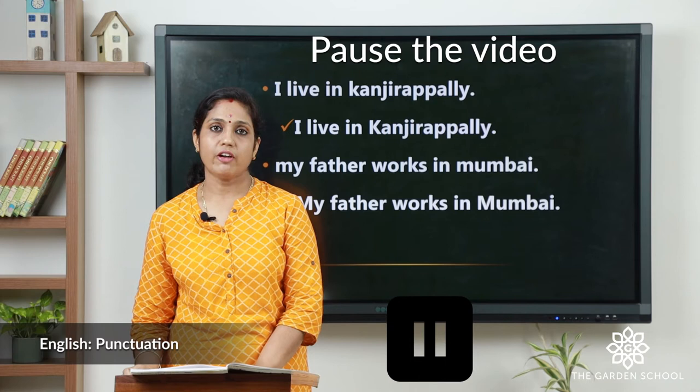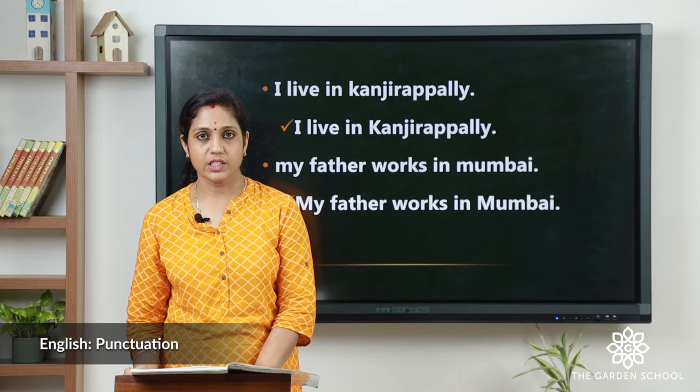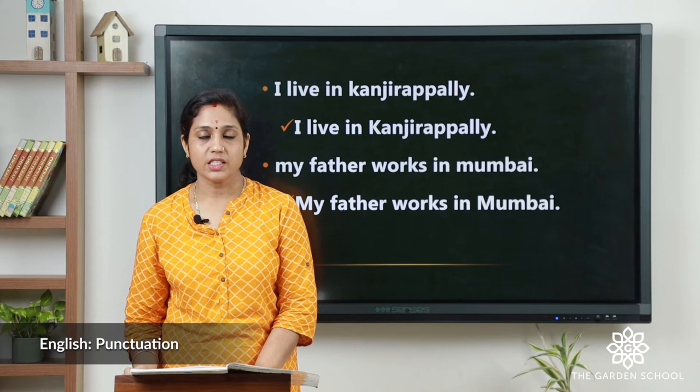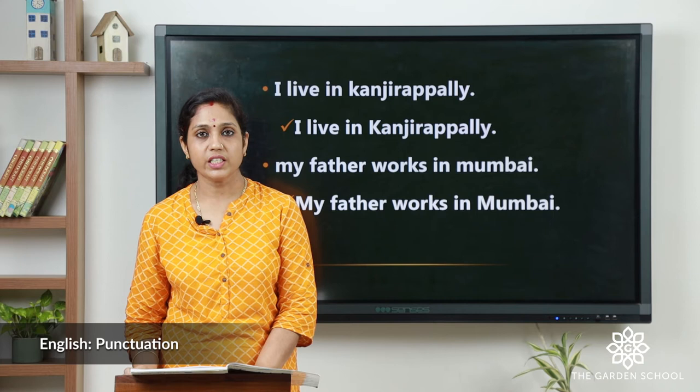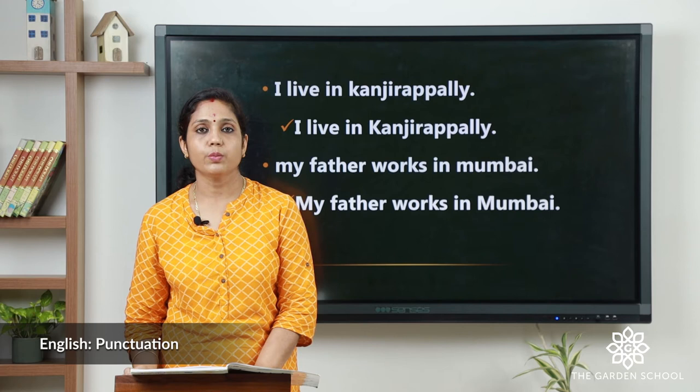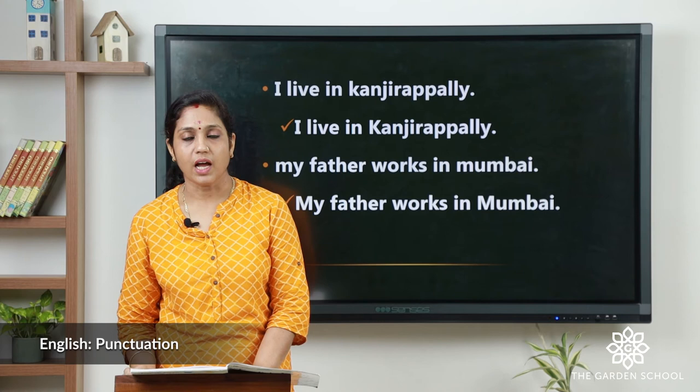Pause the video, do the exercise, then come back. Now let's discuss the answers. First question: 'The lion is the king of the forest.' The first word is 'the' and the first letter is 'T,' so we have to write 'T' as a capital letter: 'The lion is the king of the forest,' and put a full stop at the end.